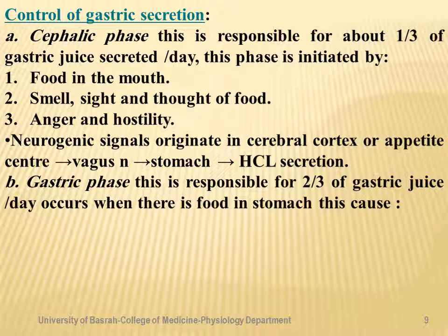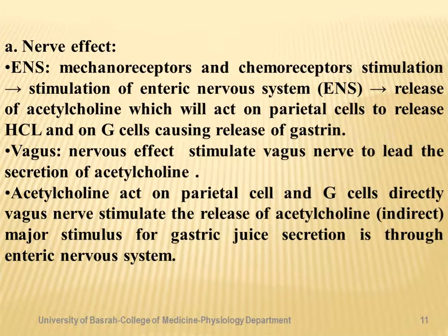The gastric phase is responsible for about two-thirds of gastric juice secretion per day. Mechanoreceptors and chemoreceptors in the stomach stimulate the enteric nervous system to release acetylcholine, which acts on parietal cell M1 and M2 receptors to release HCl, and also acts on G cells to release gastrin hormone. Parasympathetic stimulation via the vagus nerve also releases acetylcholine acting on parietal cells and G cells. The major stimulus for gastric juice secretion is through the enteric nervous system.